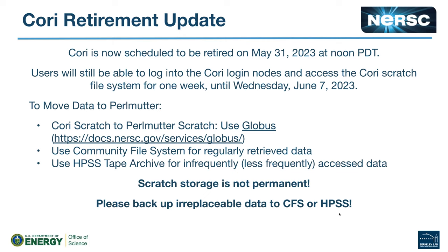So I need to reset the stripe setting on the Perlmutter side — you do need to set it on Perlmutter. Log into Perlmutter, create the directory where you want the data to go — it could be your top level scratch directory or a subdirectory — then immediately do LFS set stripe with the count you want and the directory name, then get into Globus and start moving the data. Thank you. If you need more help, please submit a ticket — that's really going to be the best way to get all the help you need.